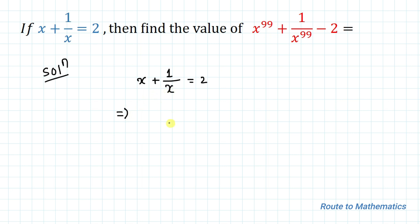Let's take LCM of x in the left hand side. Cross multiplying, we get x square plus 1 equals 2x.